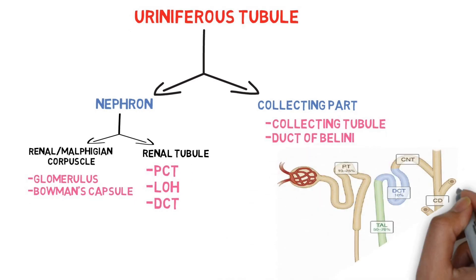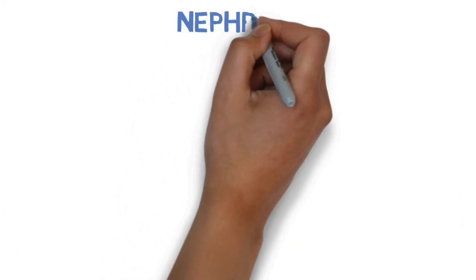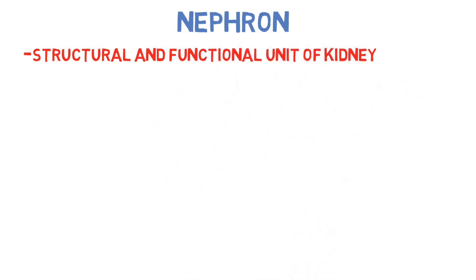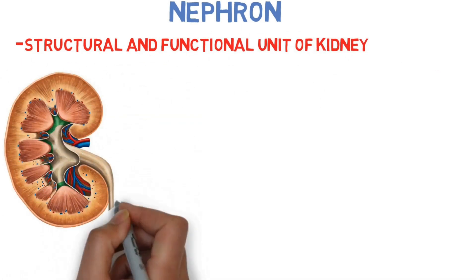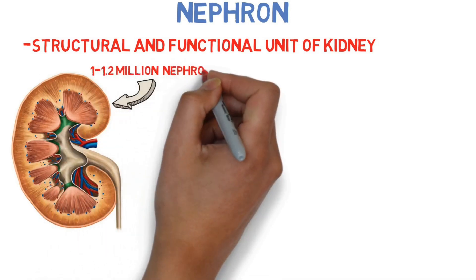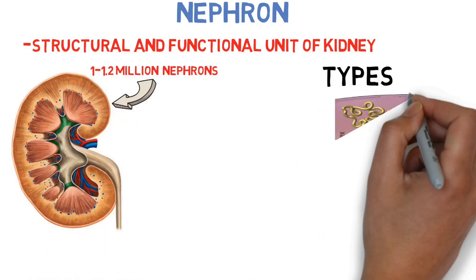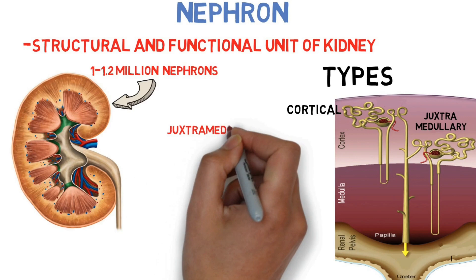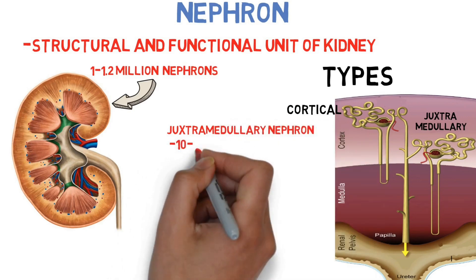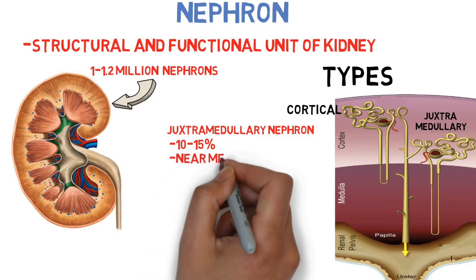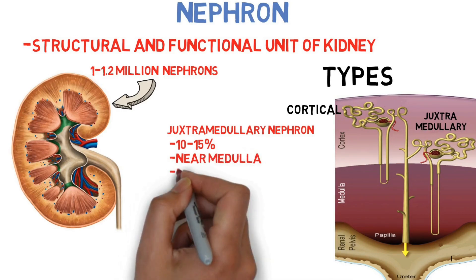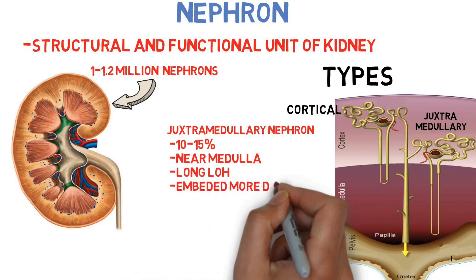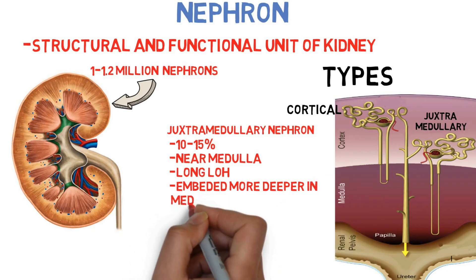The collecting part consists of collecting tubule and duct of Bellini. Now let's talk about nephrons. Nephrons are the structural and functional unit of the kidney. Each kidney consists of about 1 to 1.2 million nephrons. There are two types of nephrons: cortical nephrons and juxtamedullary nephrons. Juxta means near — as the name suggests, juxtamedullary nephrons lie near the renal medulla. They have a comparatively longer loop of Henle and are embedded more deeply in the renal medulla.